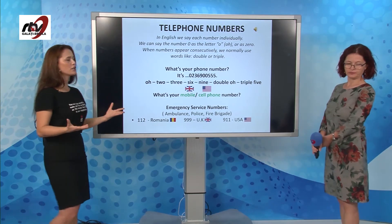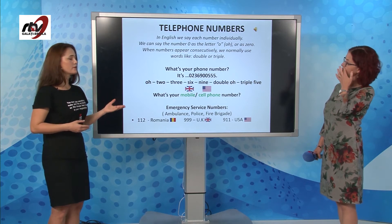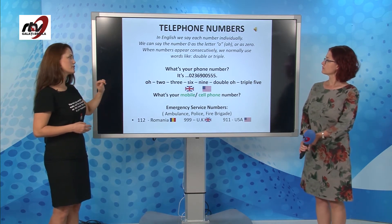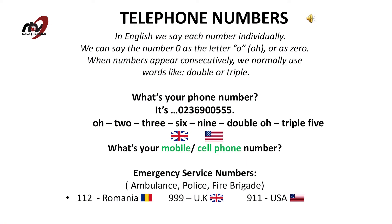Phone numbers. In English, we say each number individually. We can say the number zero as the letter O or as zero — natives usually pronounce it O. When numbers appear consecutively, we normally use words like double or triple. What's your phone number, Nicoleta? My phone number is O-2-3-6-9-double O-double 5. In England, people usually ask 'What's your mobile phone number?' but in the USA they ask 'What's your cell phone number?' For emergency services: Romania calls 1-1-2, England calls 9-9-9, and the USA calls 9-1-1.